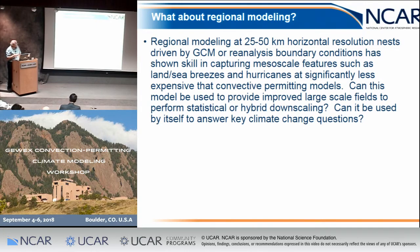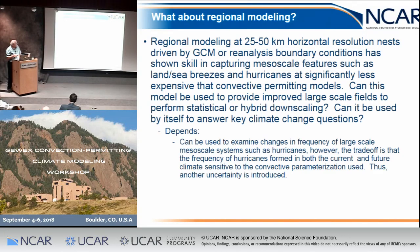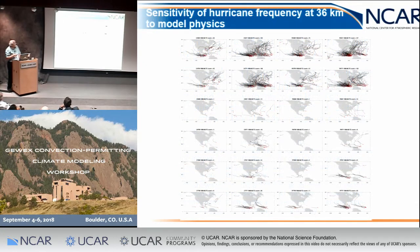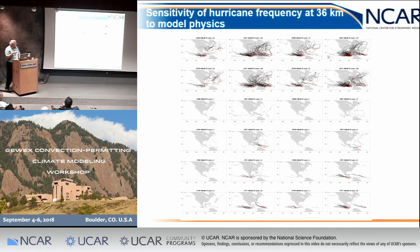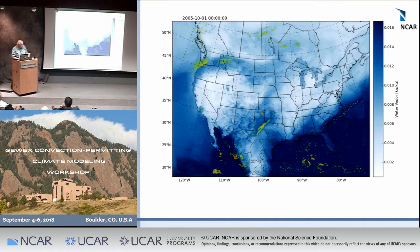Can regional modeling capture this? Probably not — it depends heavily on the convective parameterization. Cindy Bruyère's group at MMM has done simulations with three different convective parameterizations showing very different hurricane initialization at 36 kilometers over a 10-year period. This is one of the primary reasons why I think we need to go to convective permitting. Ethan's paper has shown this very nicely, and I'll just end with this movie. Thank you very much.